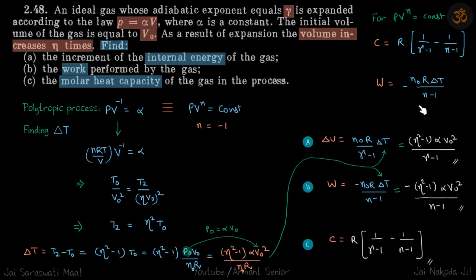So let's start writing our answers. Internal energy is n naught cv into delta t. We don't know delta t, so let's leave it here. In the second part, work performed is this, so again we don't know delta t.